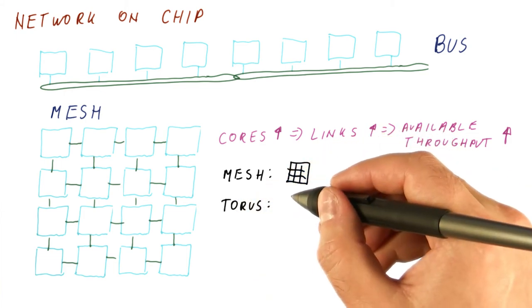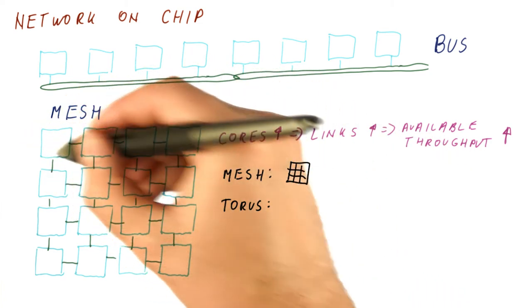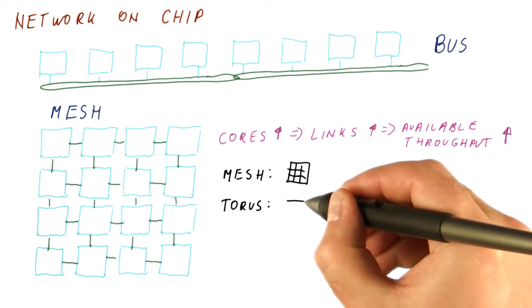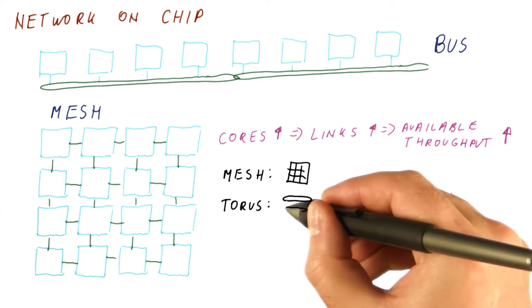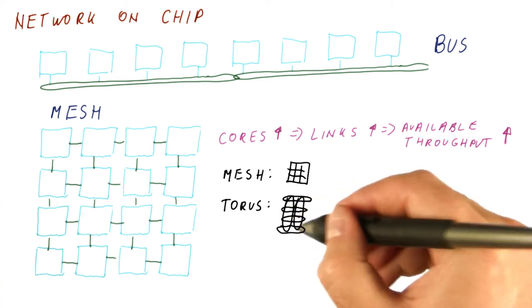We can have a torus network. You build a torus by taking the mesh and connecting the end points to each other. So the torus really takes the link and kind of wraps it around, and then wraps it around, and so on. And then you do that in the other dimension too.